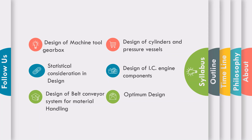In Mechanical System Design, we are going to cover the topics: design of machine tool gearbox, statistical consideration in design, design of belt conveyor system for material handling, design of cylinders and pressure vessels, design of IC engine components, and optimum design.